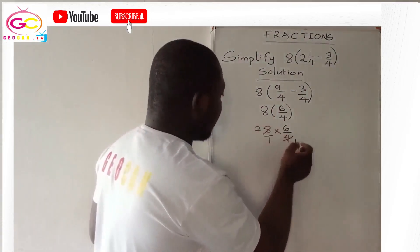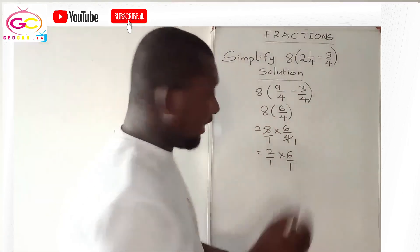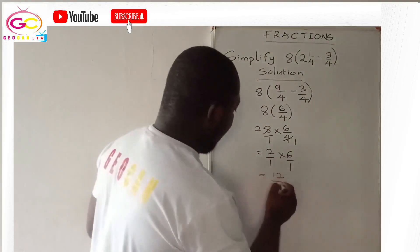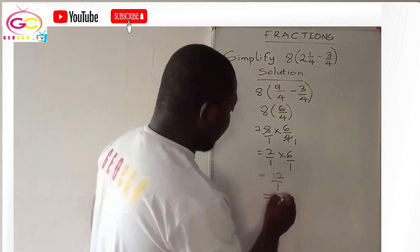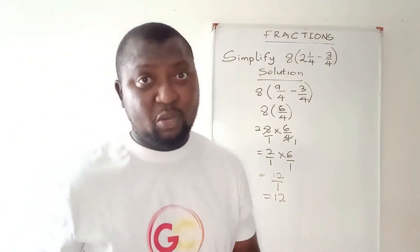4 is going into itself once. We have 2/1 times 6/1. We can cancel again, so multiply numerators: 2 times 6 is 12 over 1. Any number over 1 is the same as that number, so our answer is 12. That's Math in a Minute for you. Adios!